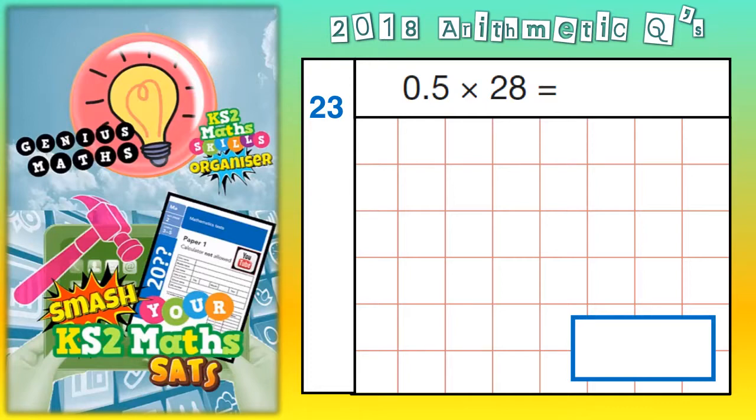Now, there's two ways you could do this. You could instantly recognize that 0.5 is a half and do a half times 28, which would be a half of 28. A half of 28 is 14. So the answer is 14.